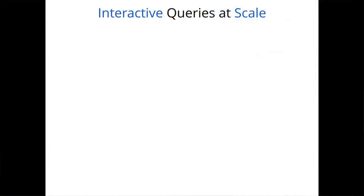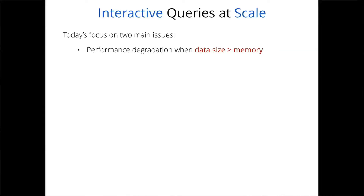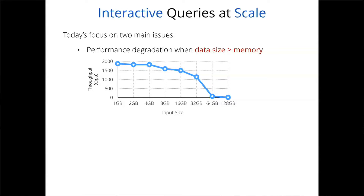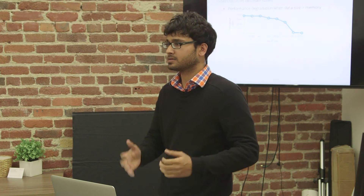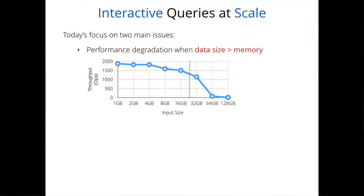Most of these systems are pretty good at what they do. But I'm going to focus on two problems that almost all of them run into. The first problem has to do with degradation of performance when the total amount of data grows much larger than the available memory. We looked at a generic big data system and measured its throughput as a function of total data size. As long as the data fits in memory, performance is decent. As soon as the data grows beyond available memory, performance takes a drastic spike and you see severe degradation.